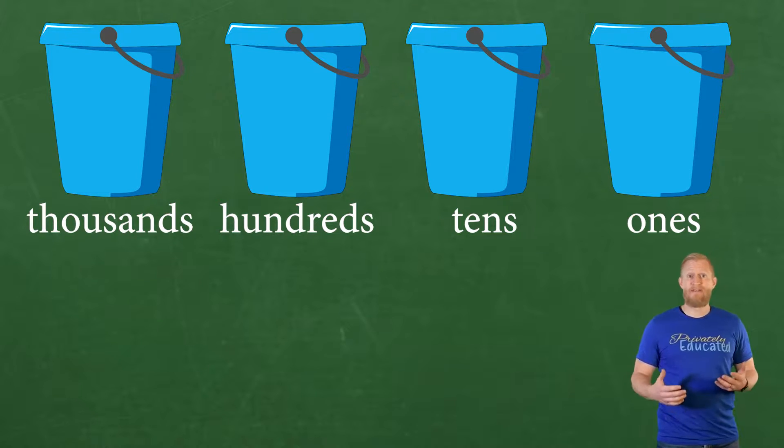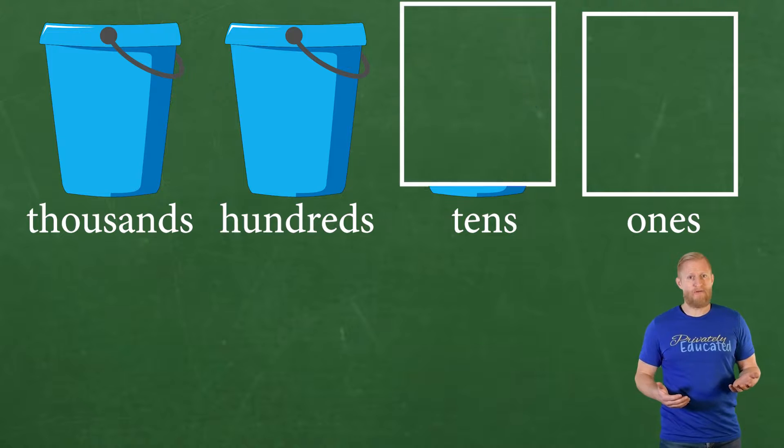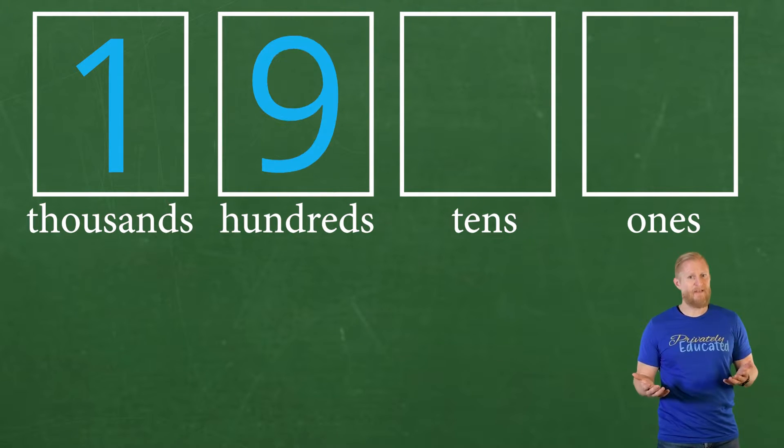This time, since we're working with just numbers and not kittens, we're going to create a box for each group instead of a bucket. And each box can only hold one digit, just like our buckets in the last video.